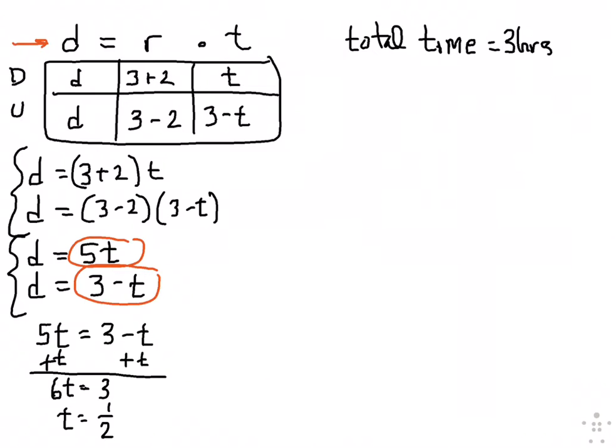T equals half an hour. So now let's see what it actually says. It says, how much time can he spend going downstream? So we represented T right here. Our variable T was downstream. So the first answer is, he can spend a half hour going downstream.